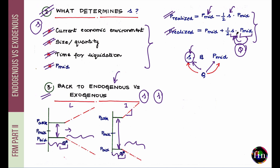For exogenous liquidity, there is no dependence between the two random variables, so you can choose a worst-case S independently from the worst-case P_mid — making exogenous models much simpler to work with. In summary, this video took a comparative look at endogenous versus exogenous liquidity, supported by an understanding of how VAR is affected by transaction liquidity.